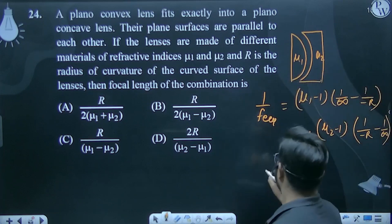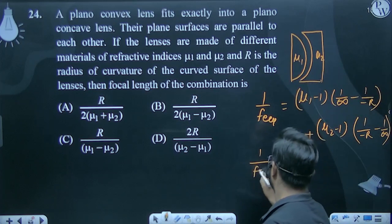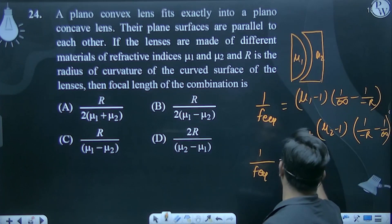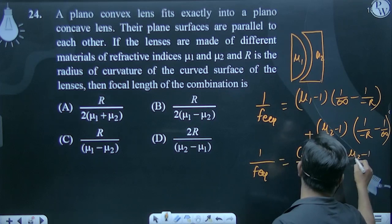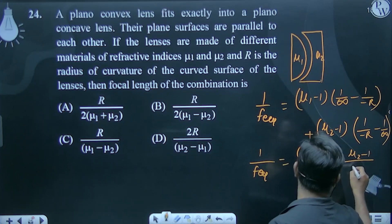1 by f equivalent equals to mu 1 minus 1 upon R, plus mu 2 minus 1 upon R.